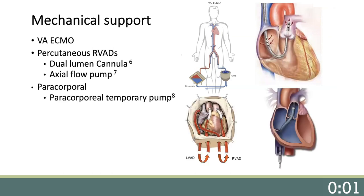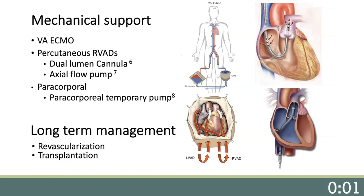When more support is needed, temporary paracorporeal pumps can establish more support, or bi-V support, especially after cardiotomy. The goal is to optimize patients for recovery, which may require revascularization. These pumps should be weaned over days to weeks. Currently there are no approved implantable RVADs. If there is no recovery, patients need to be evaluated for transplantation, and other options for long-term support include the total artificial heart, or off-label use of implantable pumps on the right side.